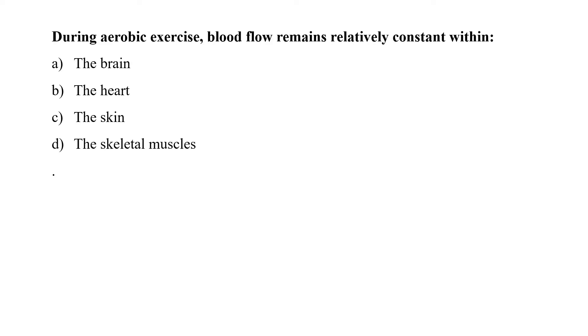During aerobic exercise, blood flow remains relatively constant within the brain, the heart, the skin, or the skeletal muscles. Aerobic exercise causes increased heart rate and cardiac output in most of the tissue except brain, which remains almost constant due to the autoregulatory mechanism. So option A is the correct answer.